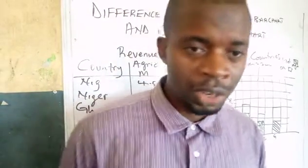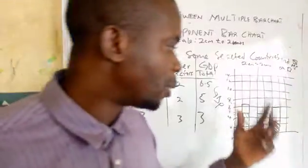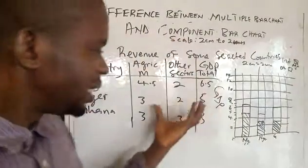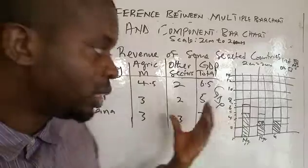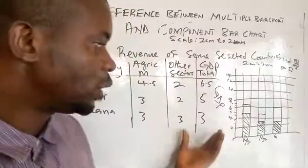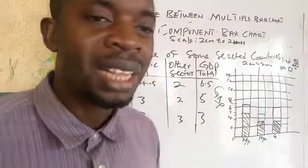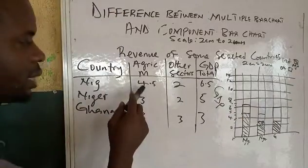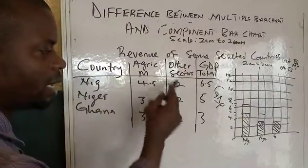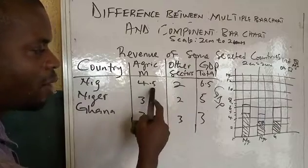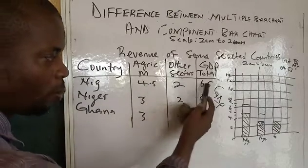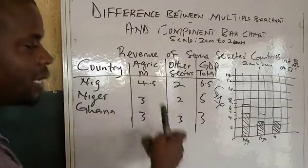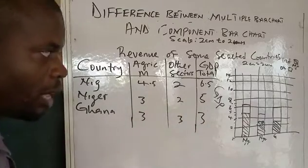I explained what a quantitative variable is in our previous video. Now let's use the same data for a multiple bar chart, since we've said we can use it for multiple bar chart. The difference is that in a multiple bar chart, the individual variables are placed side by side of each other.